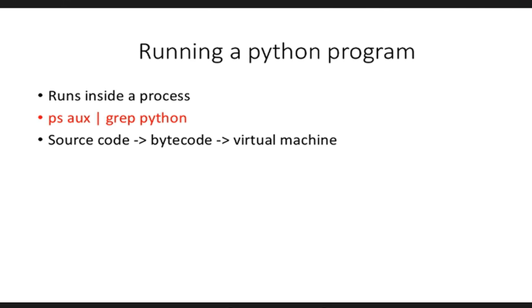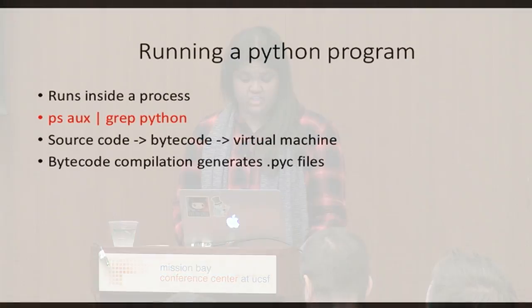How does a hello world program turn into an executable? In Python, your source code is compiled into something called bytecode. If your Python process has write access, that bytecode gets written to a .pyc file. If you see .pyc files in your system after running a Python script, now you know what they are — it's the Python bytecode. The bytecode gets fed to the Python virtual machine, which is essentially a big loop that iterates through your bytecode instructions to turn them into machine instructions. With Python, you just have bytecode compilation; unlike C or Go, there's no build or make step. Python is a dynamically typed and interpreted language.